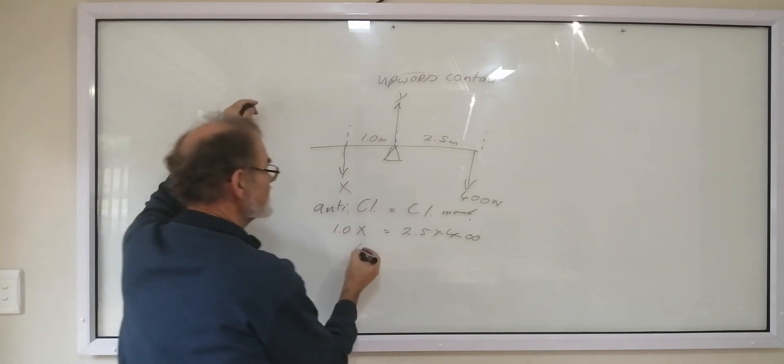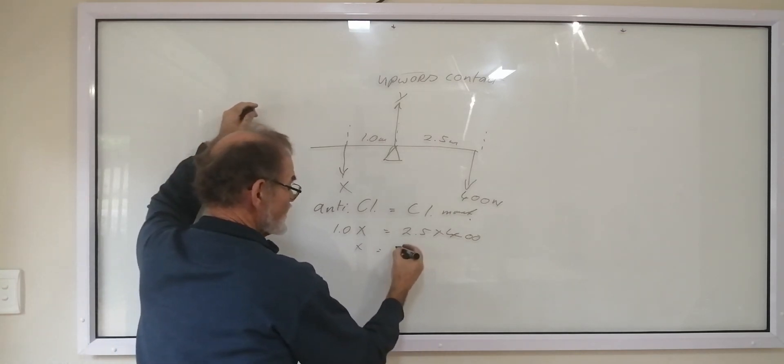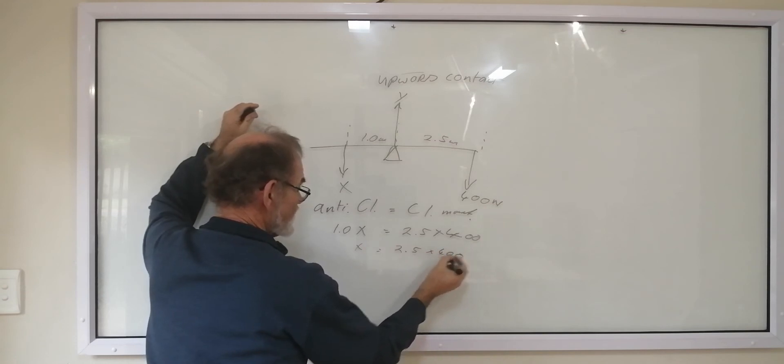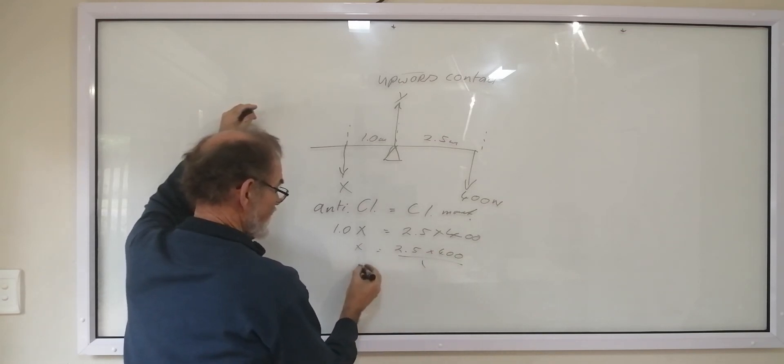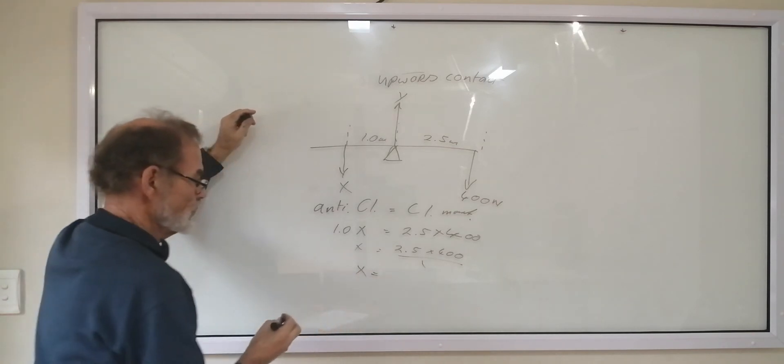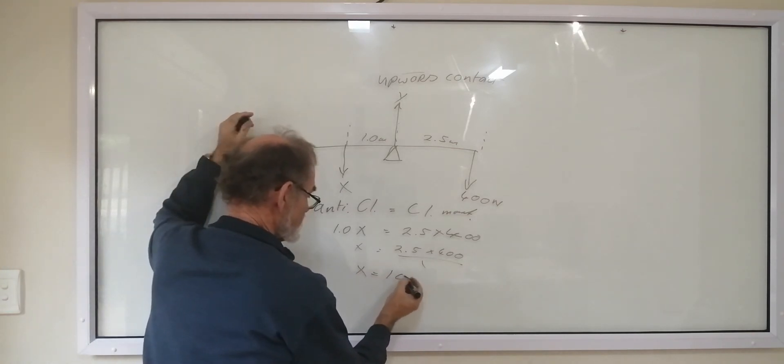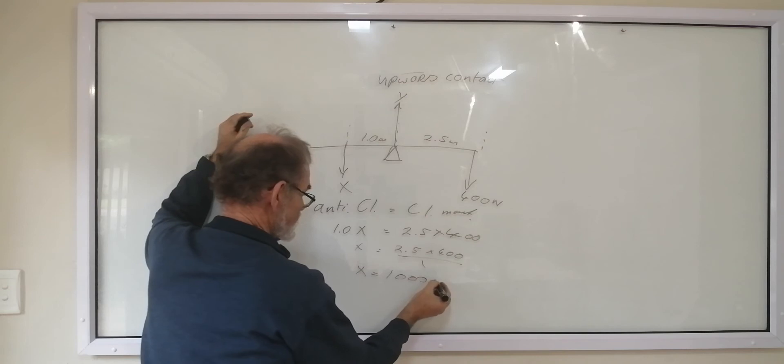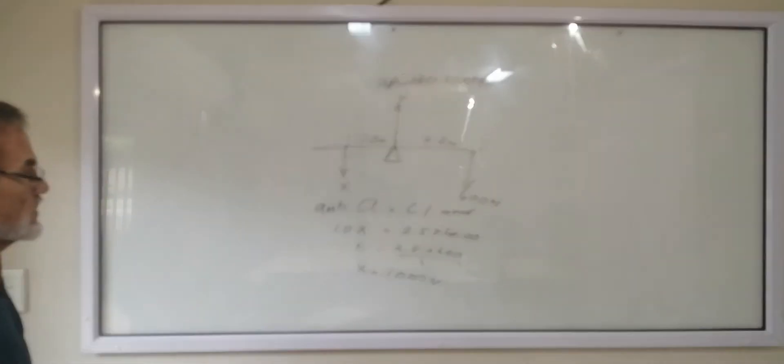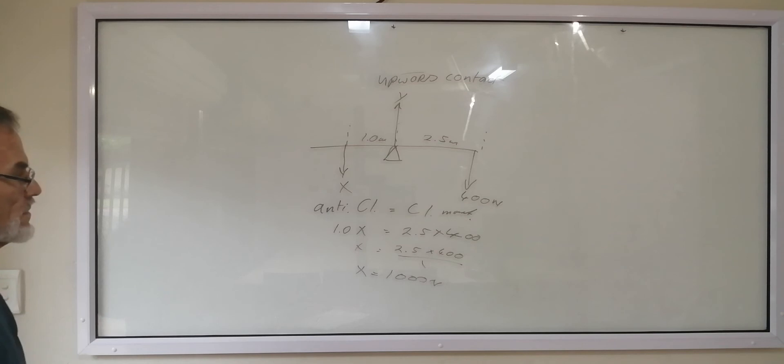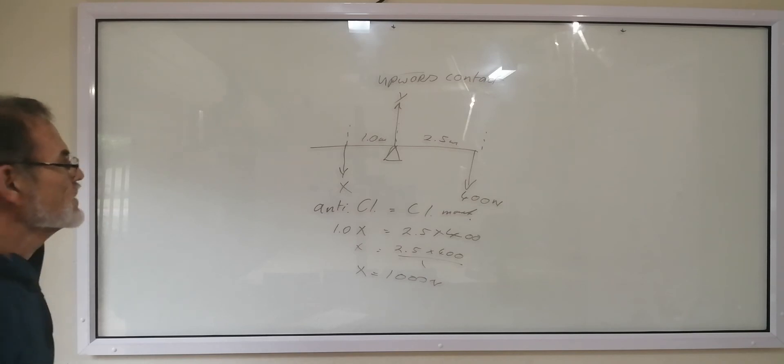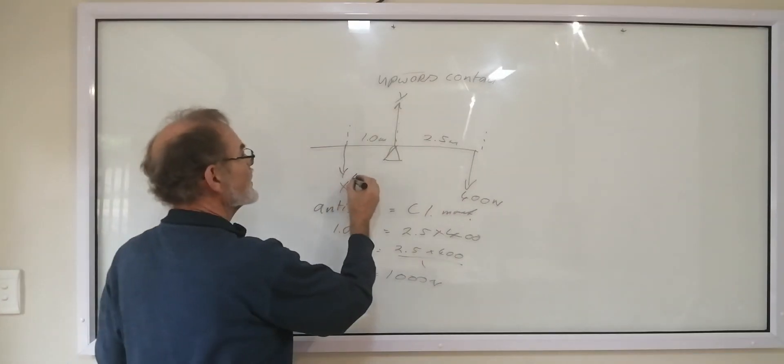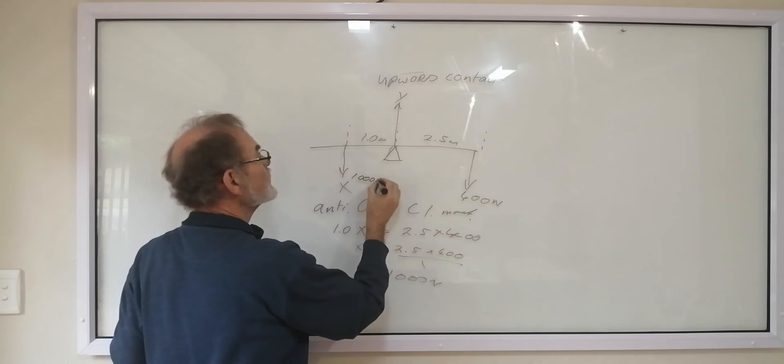So this is 1.0 X is equal to 2.5 times 400. Therefore, X is equal to 2.5 times 400 over 1. So X is equal to 1000 newtons.